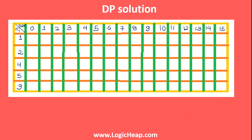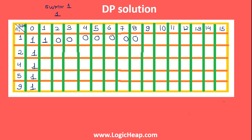For sum equal to 0, I can always make it whatever integers are given, so I will store 1 in the entire first column. Now consider the first row: can I make sum equal to 1 using only integer 1? Yes, of course, so I store 1. But I cannot make sums 2, 3, 4, and so on using only integer 1, so I store 0 through to sum 15.